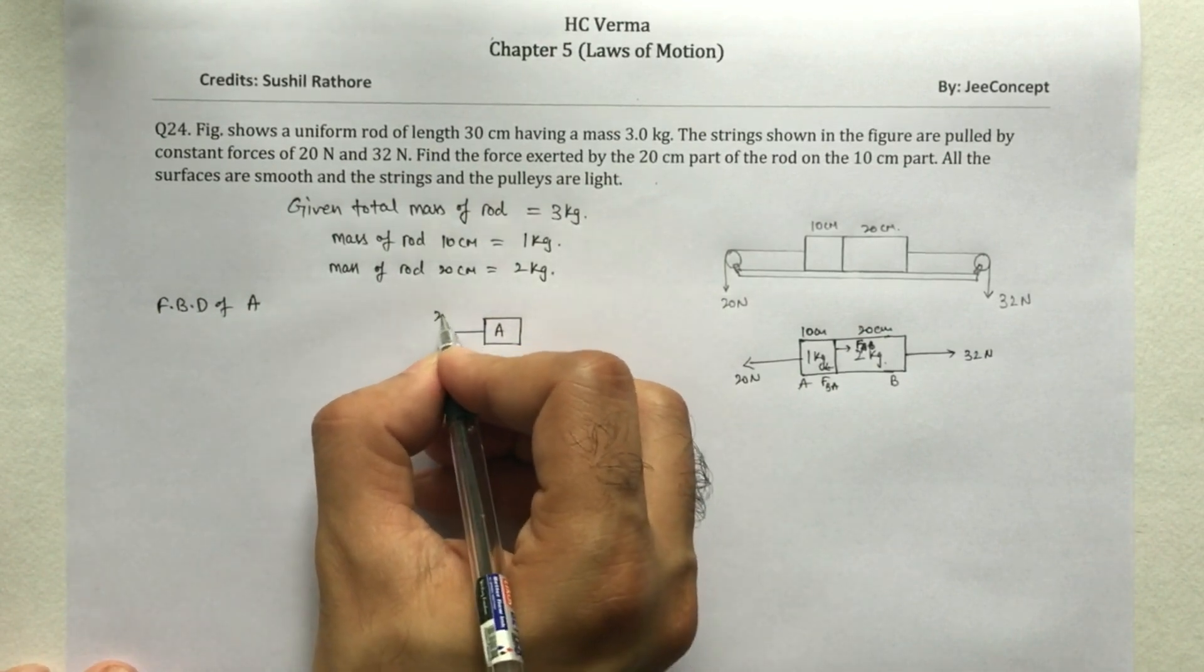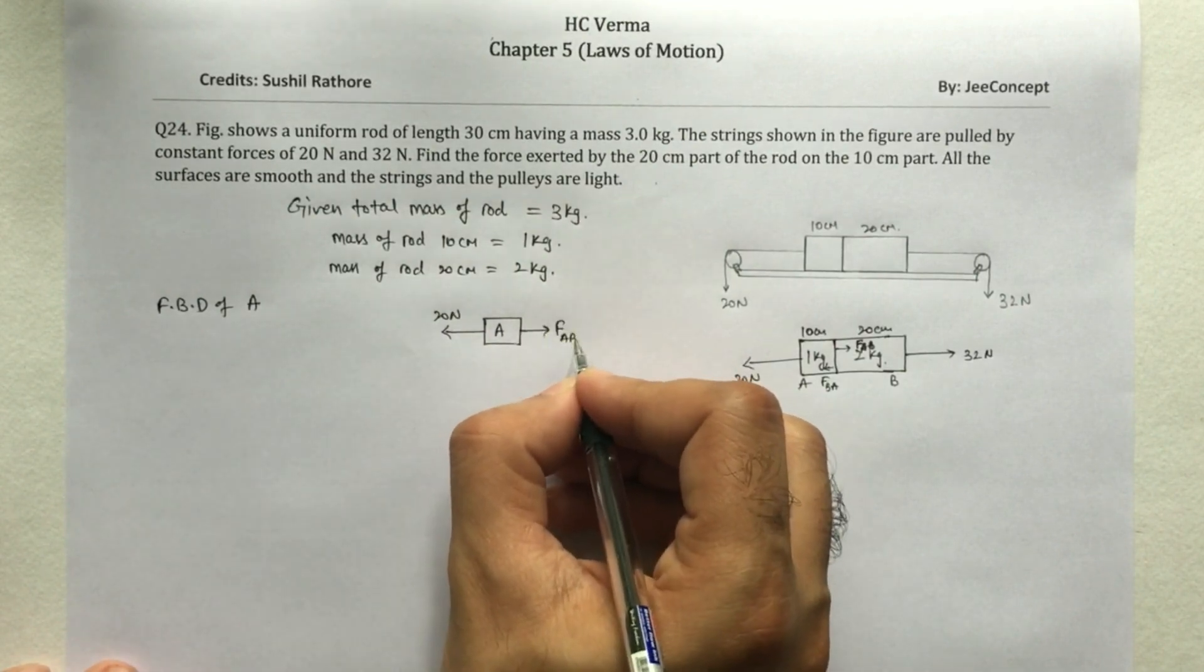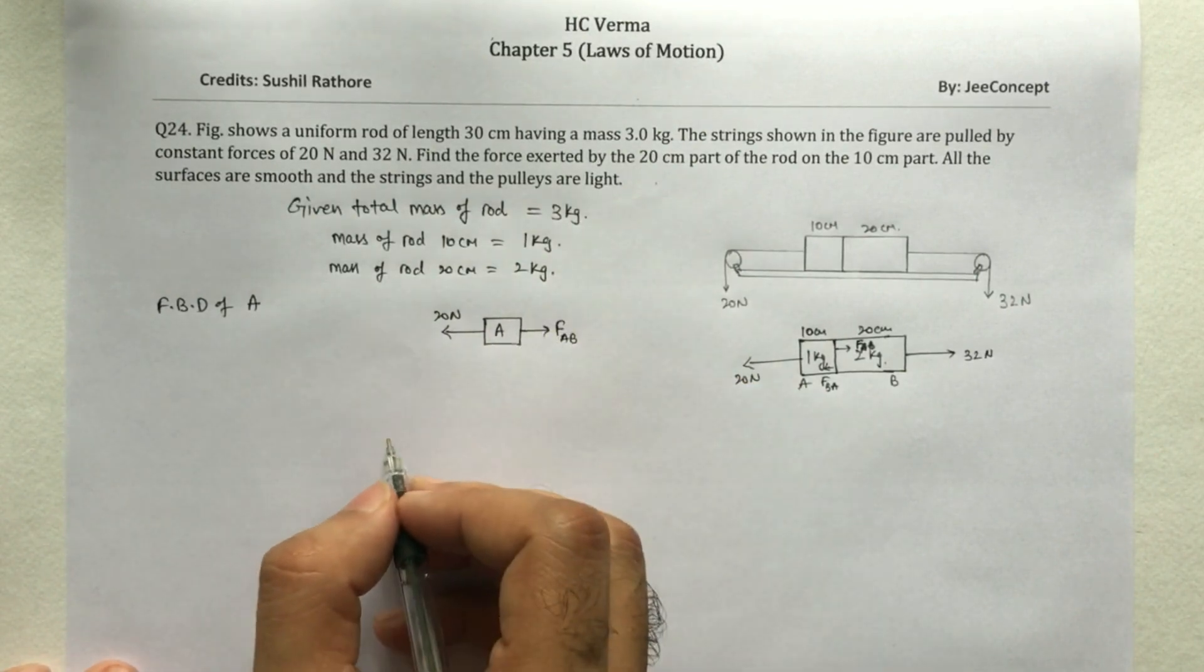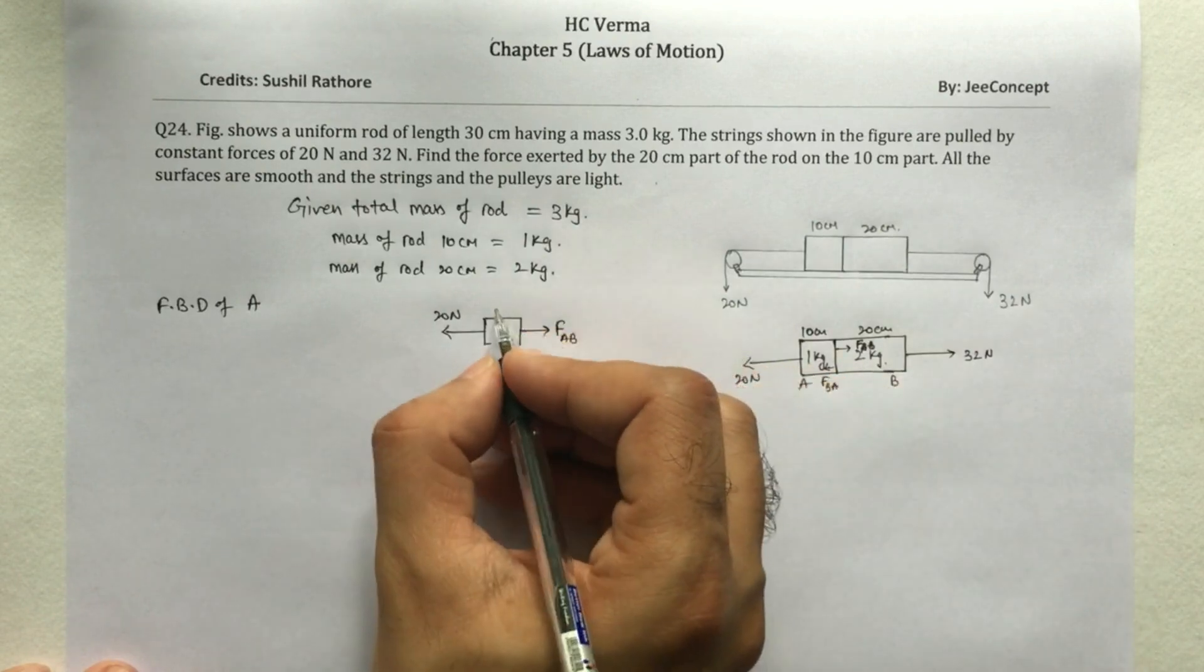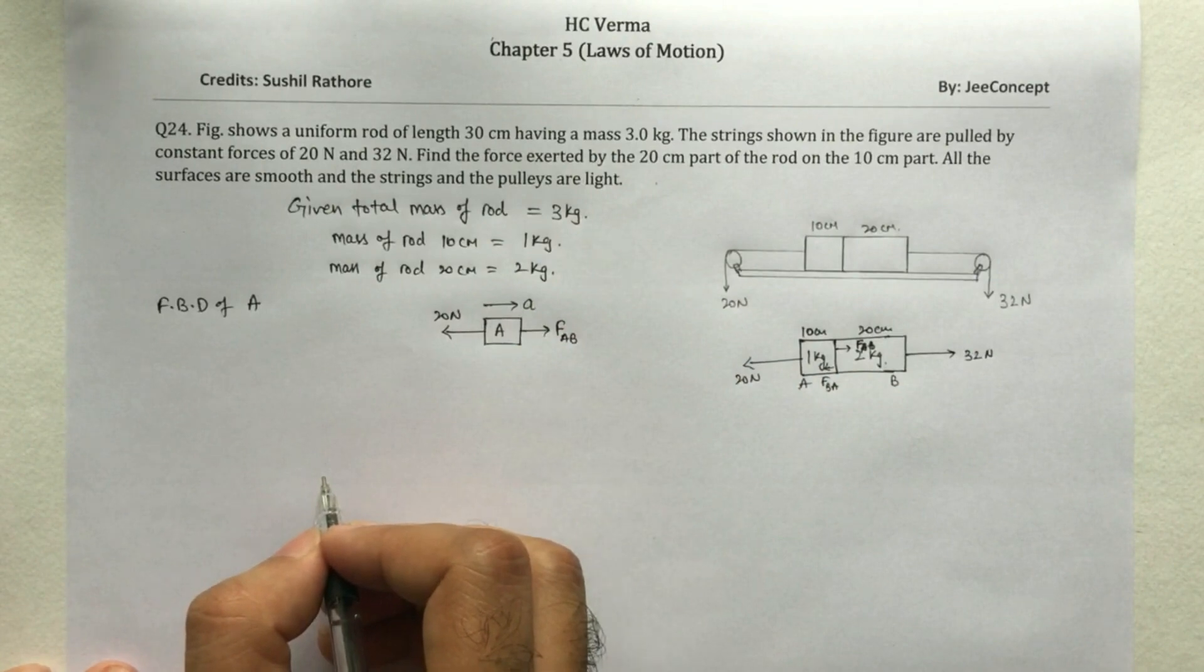There will be a force of 20 N here and the force on A due to B acting in the right hand direction, and say the rod is moving with an acceleration of A.